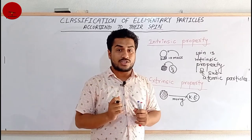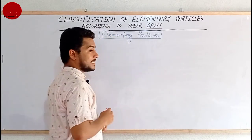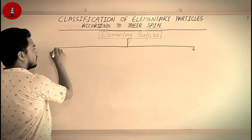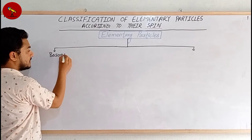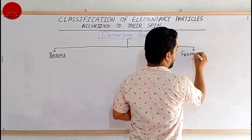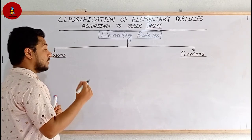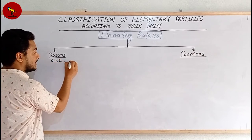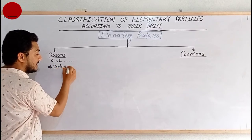We can classify elementary particles into two categories according to their spin: bosons and fermions. Bosons are such subatomic particles which have integral spin, like 0, 1, 2, and so on. Such a type of spin is called integral spin.